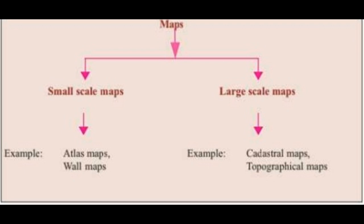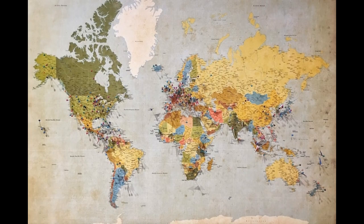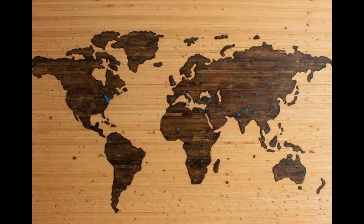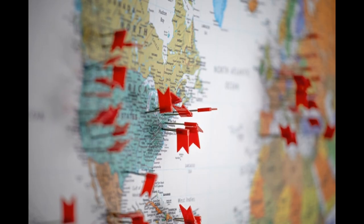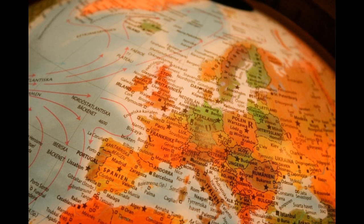Based on scale, maps can be classified into two types: small scale maps and large scale maps. If larger areas such as the world, continent, countries, and states are to be depicted on a small sheet of paper, only a little information can be incorporated into it. Maps showing only the important information of larger areas are called small scale maps. For example, world map, India map, etc. — in a world map, only important information like nations, capitals, and important towns can be included.